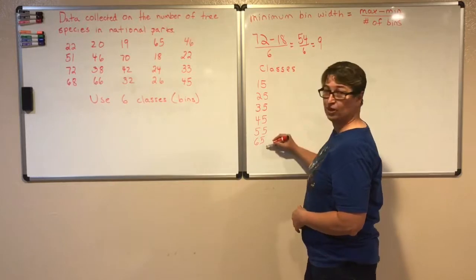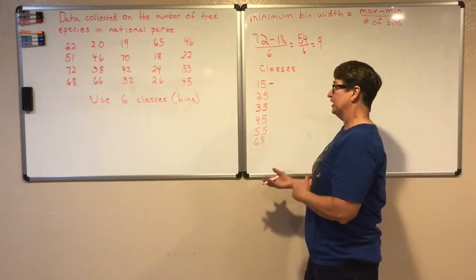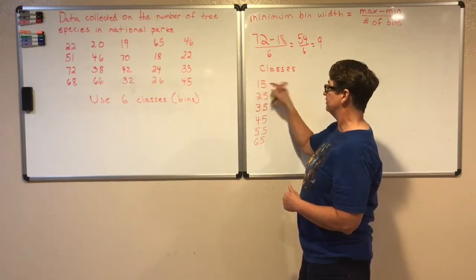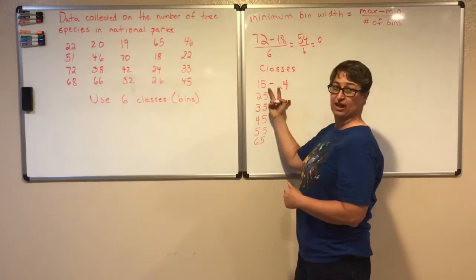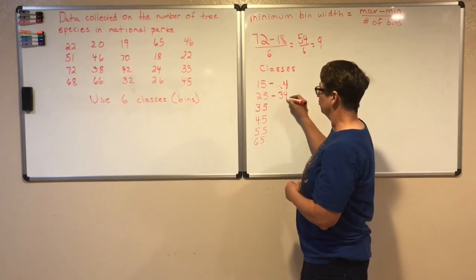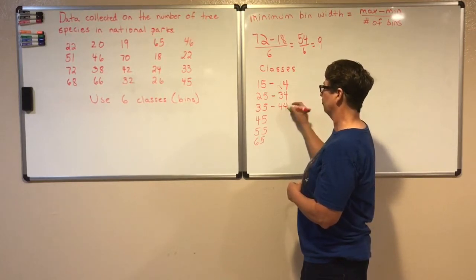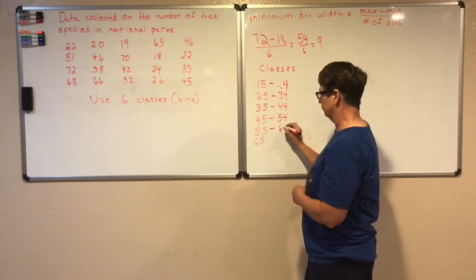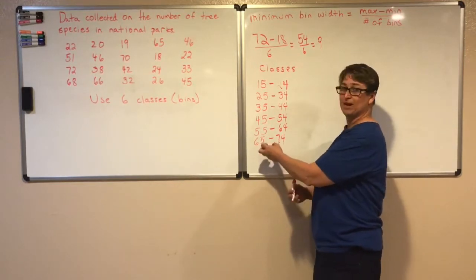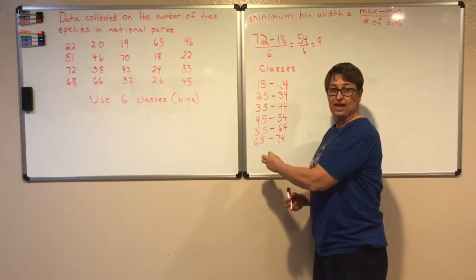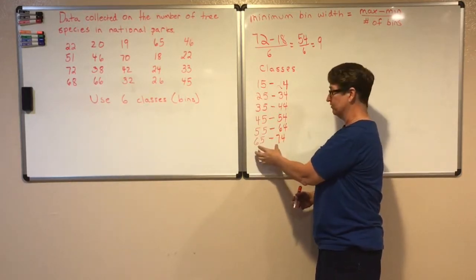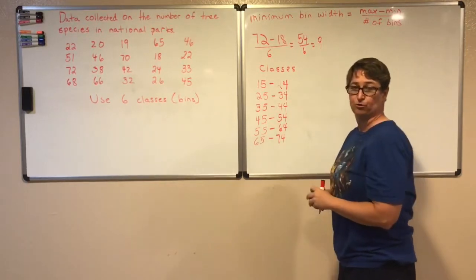Now those are going to be the minimum values of each of those classes. Then from there we need our maximum value of our classes. We're not going to quite make it to 25 so all of our numbers between 15 and 24 will be in this class. All of our data values between 25 and 34 will be in that class, from 35 to 44 will be in this class, and I'm just counting by tens to get those maximum values of my classes or my bins. Now we want to check and make sure that all of our data values fit within a class or bin. My lowest number was 18 so he has a home and my maximum number was 72 so he has a home so everybody has a class or a bin to belong to.